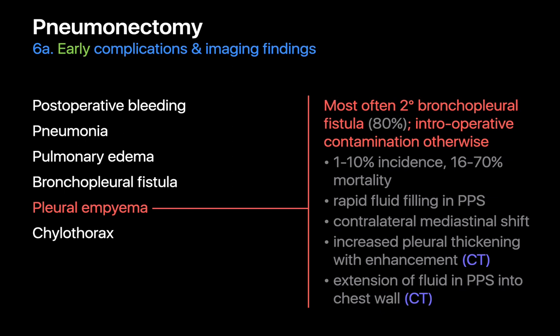Pleural empyemas are another early complication, most often in the setting of a bronchopleural fistula, with intraoperative contamination as the leading cause otherwise. Incidence is under 5% but mortality can be high. We suspect an empyema if serial chest x-rays show rapid fluid accumulation or hyperdistention of a completely opacified post-pneumonectomy space with contralateral shift. CT imaging features include a convex mediastinal border on the side of the pneumonectomy, irregular pleural thickening and enhancement, a split pleura sign, air-fluid levels, or overt extension of abnormal fluid into the chest wall.